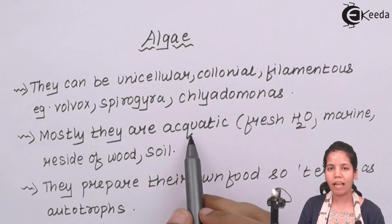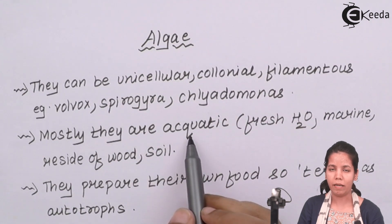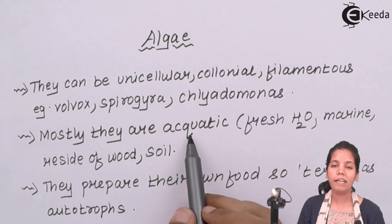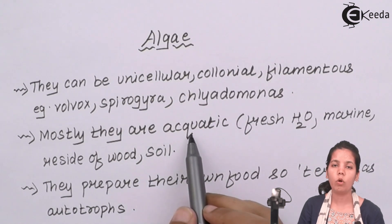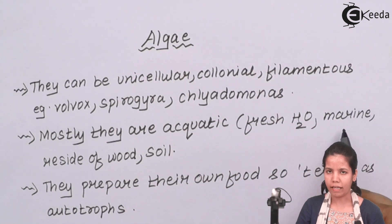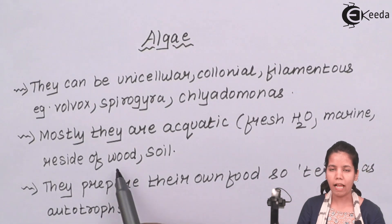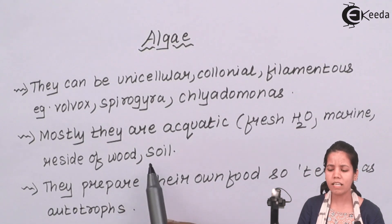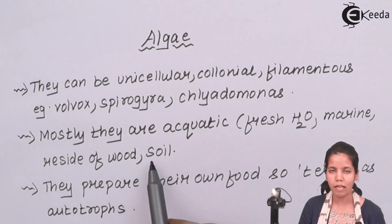Algae are basically aquatic plants that need water for survival — water in larger quantities. That is the reason you see algae growth the most during rainy seasons. There are fresh water algae and marine algae, and algae can reside on woody substances, on plastics, even on soil if water and nutrients are available.